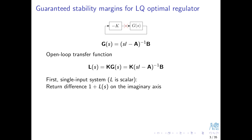In the analysis, we will investigate how the term 1 plus L — often called return difference in control theory — behaves on the imaginary axis. This term appears in the denominators of closed-loop transfer functions. We are interested in its magnitude on the imaginary axis. Substituting j·ω for s, the absolute value of 1 plus L equals the absolute value of minus 1 minus L, which can be interpreted as the distance of L from the point minus 1 in the complex plane.